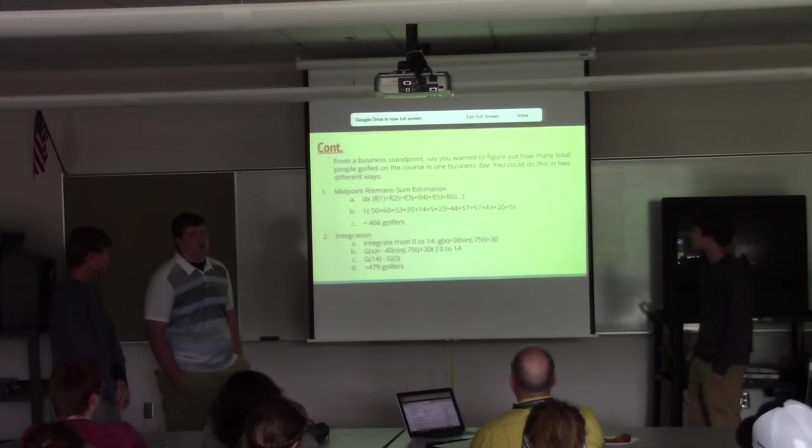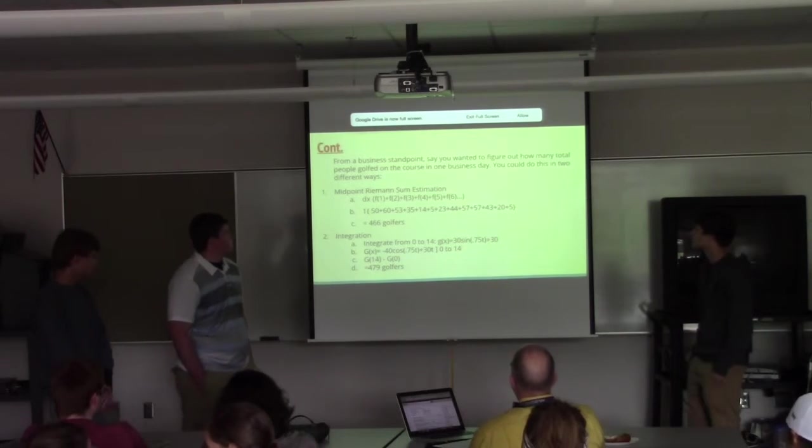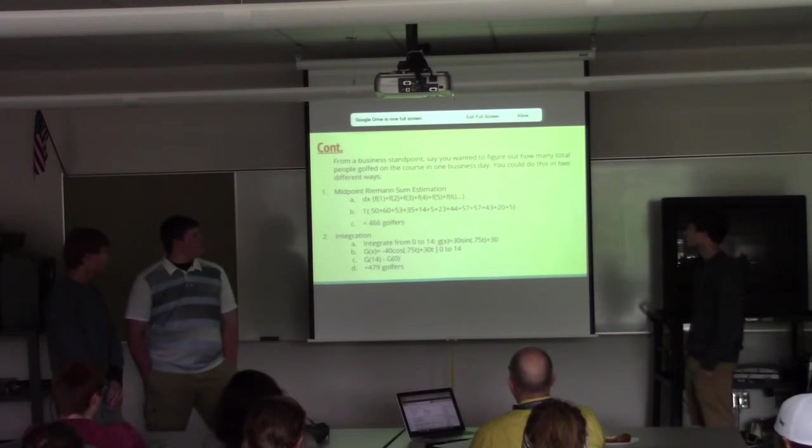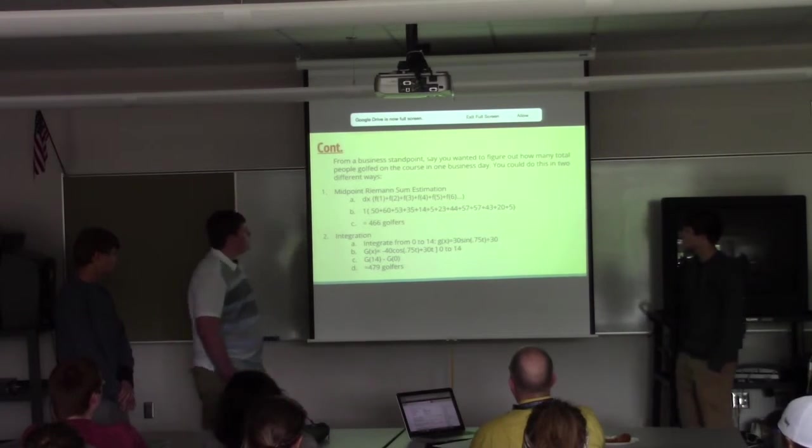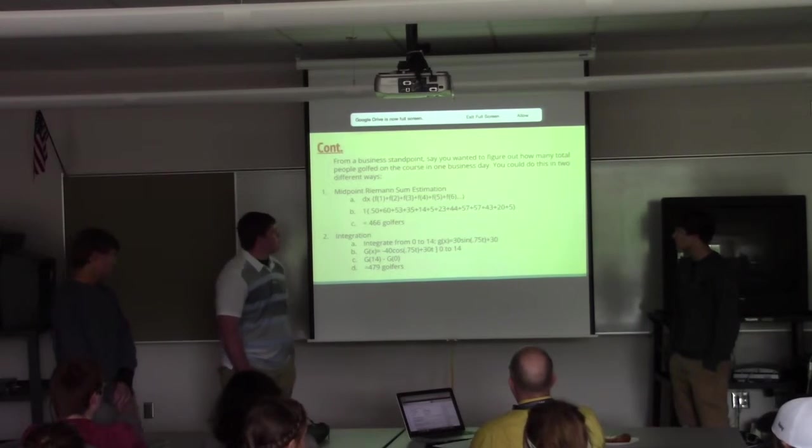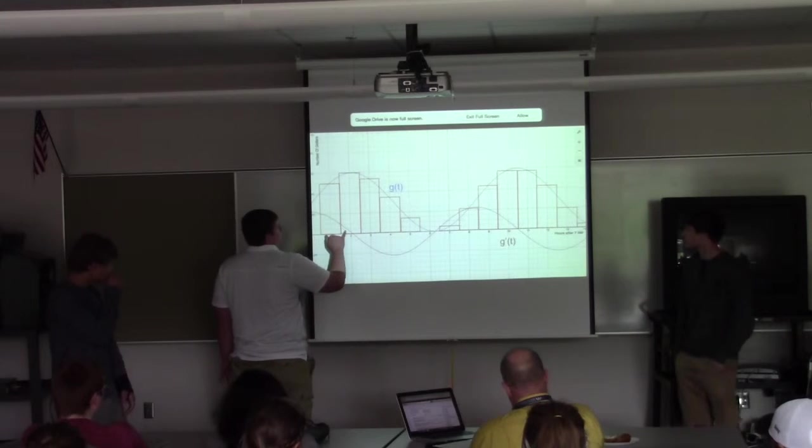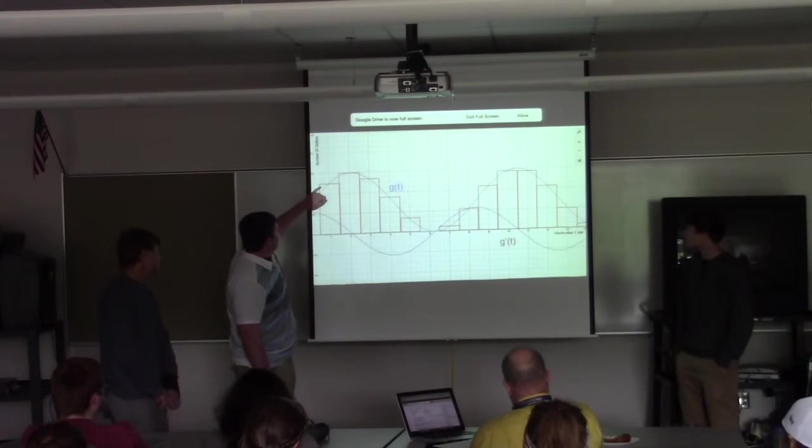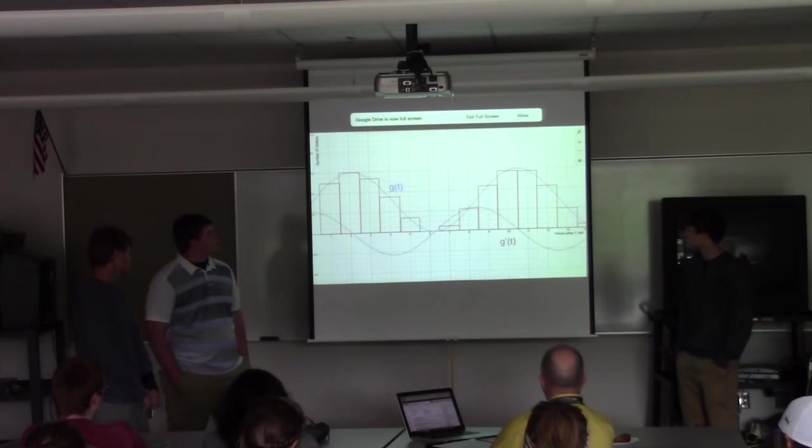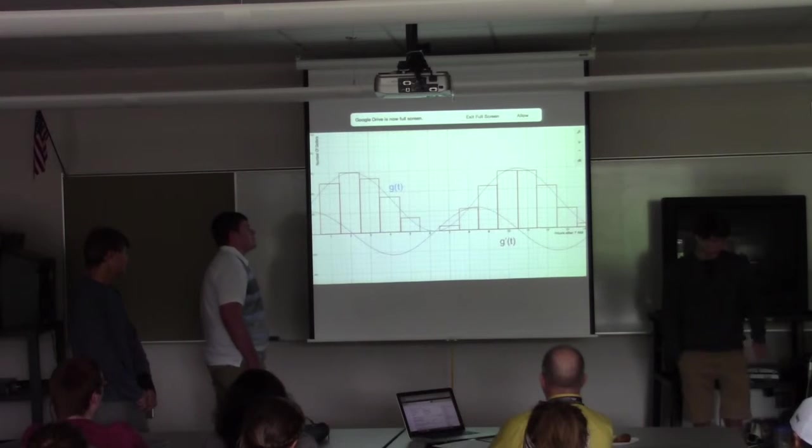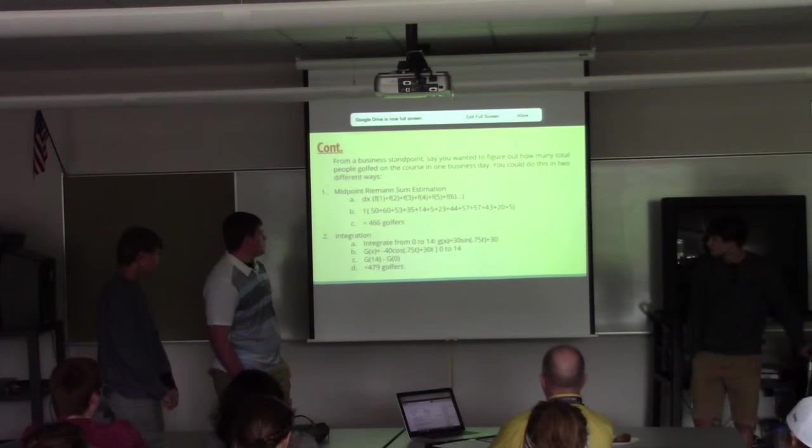You could also estimate how many total golfers there were on the course in one day using that function. You could use a Riemann sum, and I chose to use a midpoint Riemann sum because they are normally the most accurate when doing a Riemann sum. You take dx times f(1) plus f(2) plus f(3) and so on, and you get 466. These are the squares that I used - you can see that it goes above this function and below the function, so it is relatively inaccurate. But using this other method, you can integrate from 0 to 14 of g(x) and you get 479 total golfers.